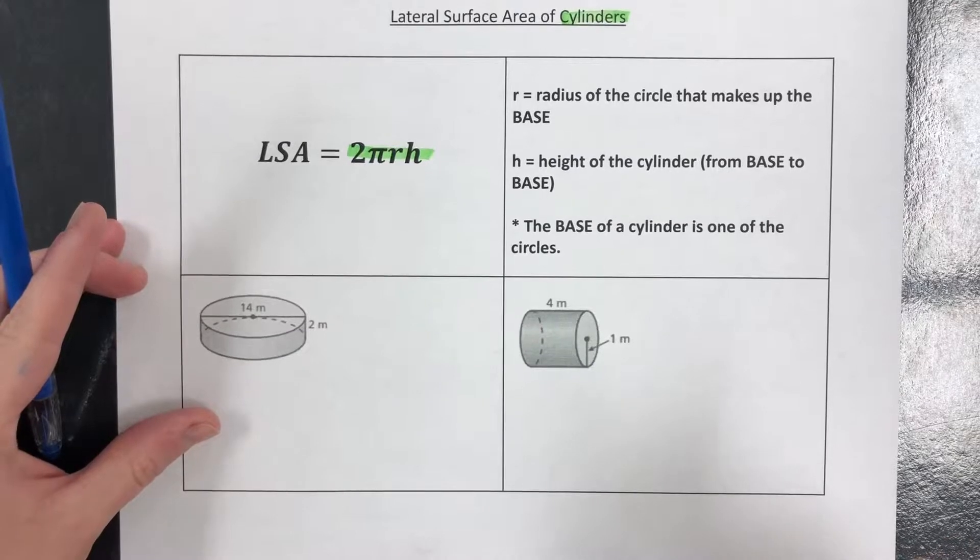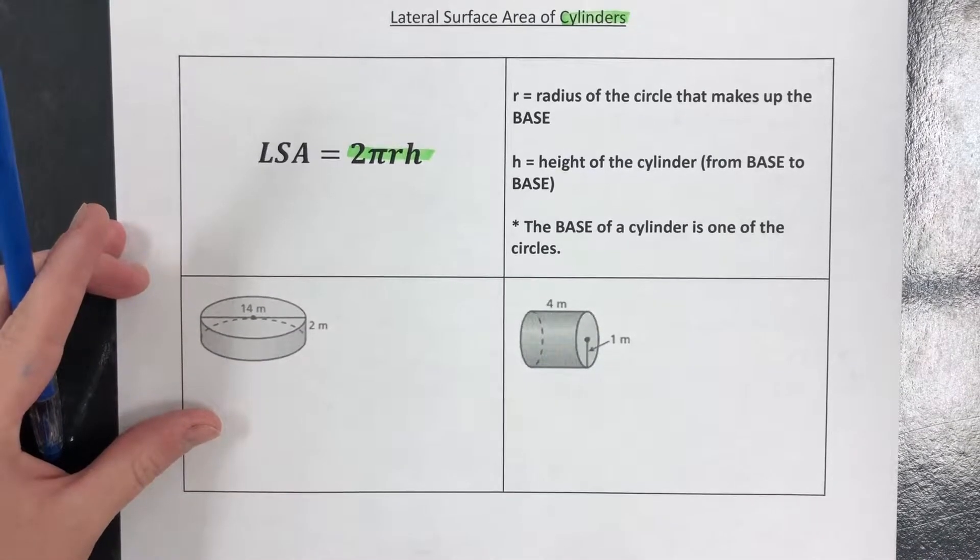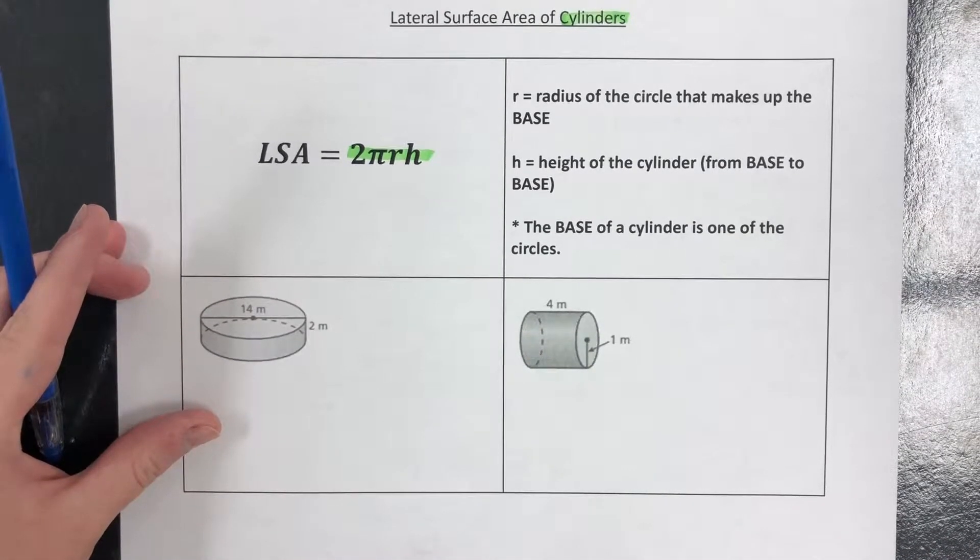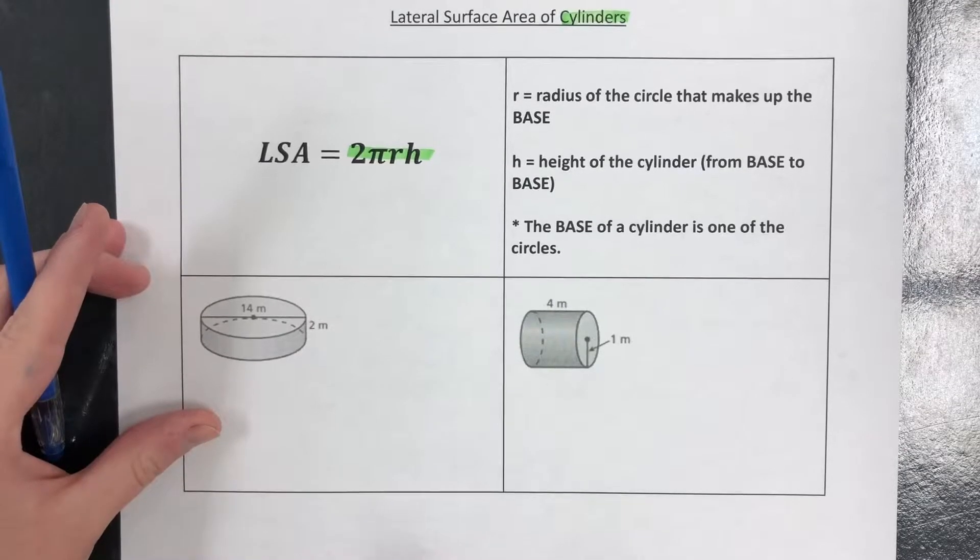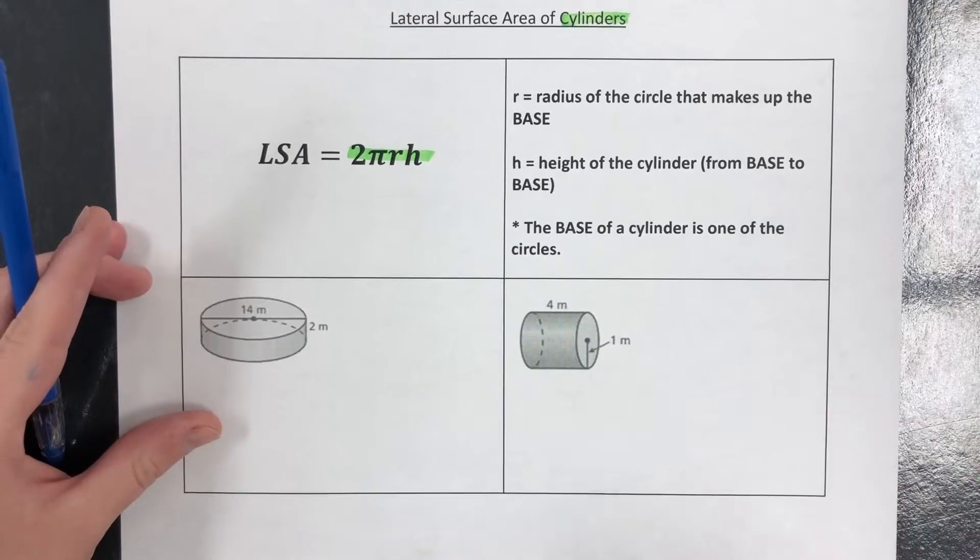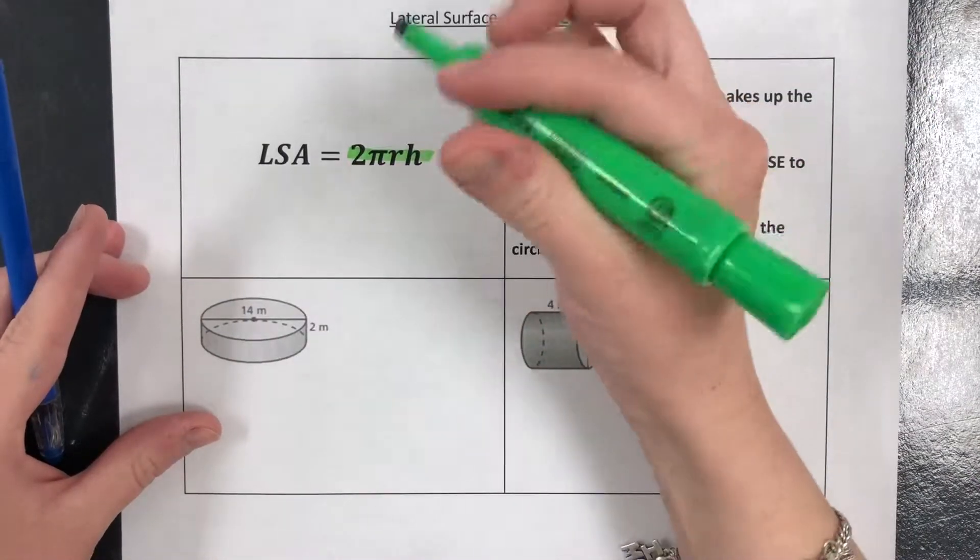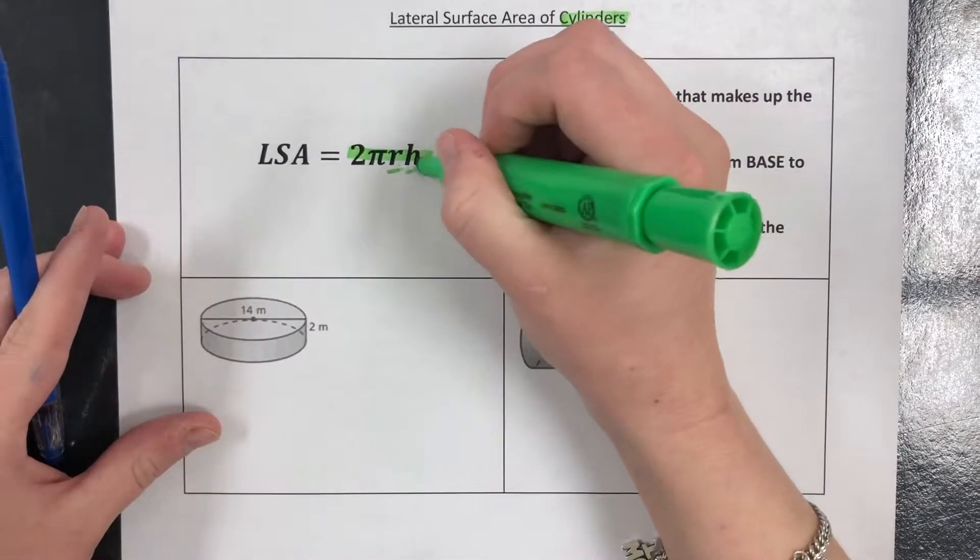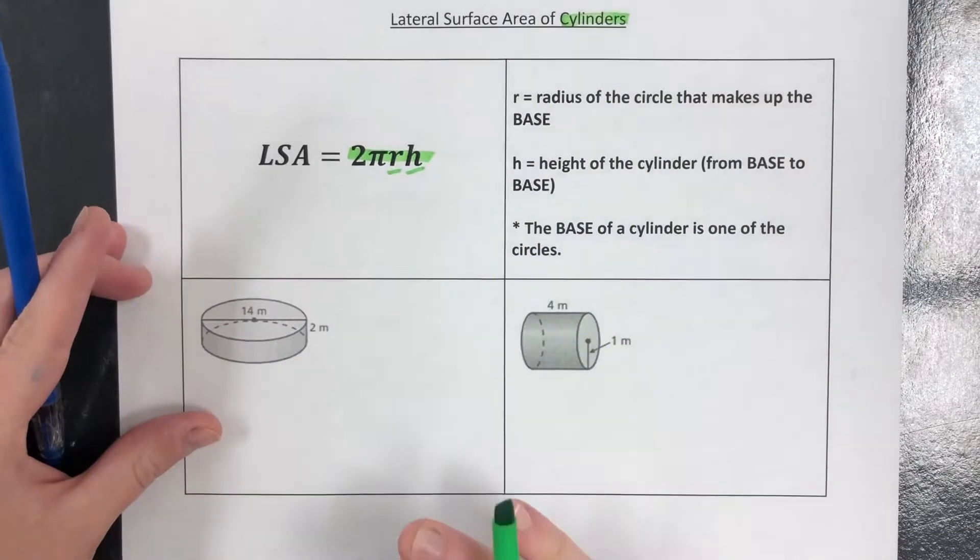That connects those two circles. In this case with lateral surface area, all you're solving for is the area of the rectangle that makes up the middle between the two circles that make up the bases. It's the easiest one because they give everything to you, you just have to find the radius and you have to find the height.